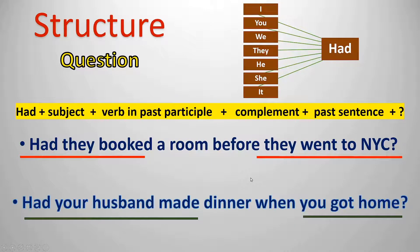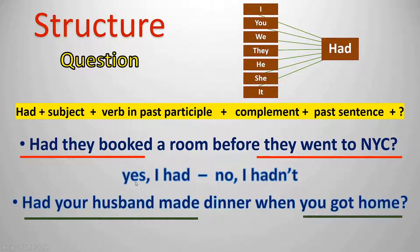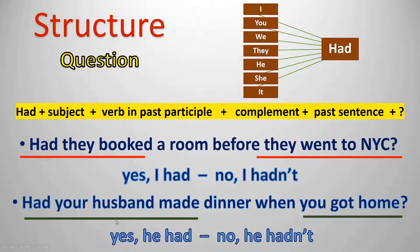Don't forget to check your short answers. For 'had they', you answer: 'Yes, they had' or 'No, they hadn't.' For 'had your husband', you answer: 'Yes, he had' or 'No, he hadn't.' Always check who the person is that you're talking about.